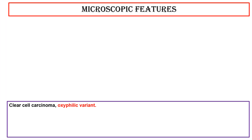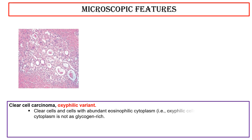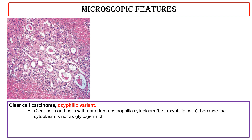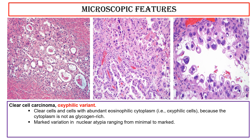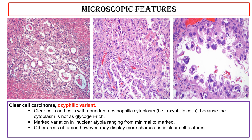Clear cell carcinoma — oxyphilic variant: this photo shows clear cells and cells with abundant eosinophilic cytoplasm — oxyphilic cells — because the cytoplasm is not as glycogen-rich. These photos show marked variation in nuclear atypia ranging from minimal to marked. Other areas of the tumor may display more characteristic clear cell features; this is not an unusual feature of clear cell carcinoma.